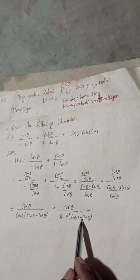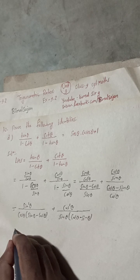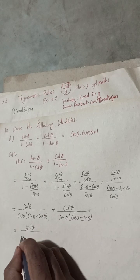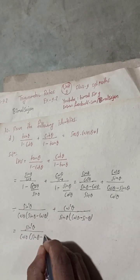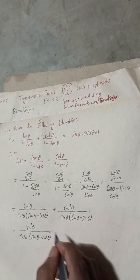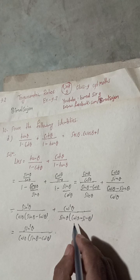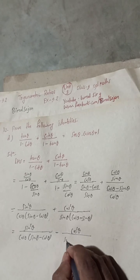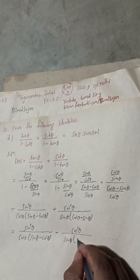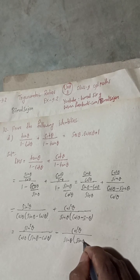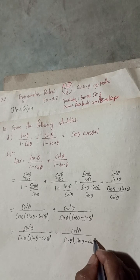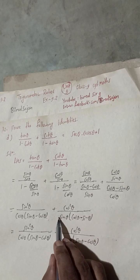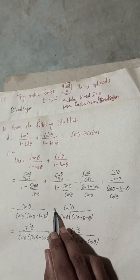This minus will become plus, and this plus will become minus. So now in the next step, if you take minus common: this minus and this plus will become plus, minus-minus becomes plus. One step has been skipped here — taking minus common flips the signs accordingly.